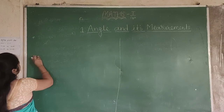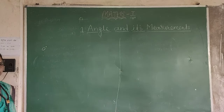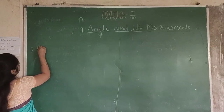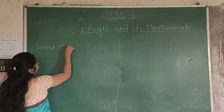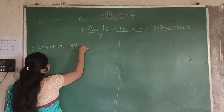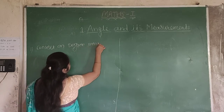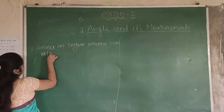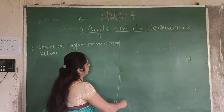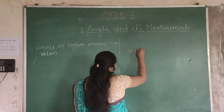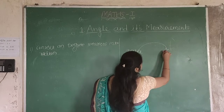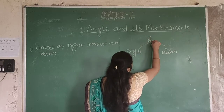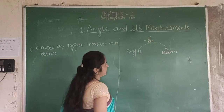First of all we take 0 degrees. To convert 0 degrees into radian measure, we multiply by pi by 180. So 0 into pi by 180 gives us 0 radians.